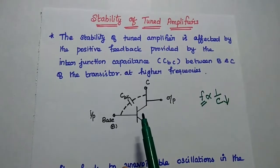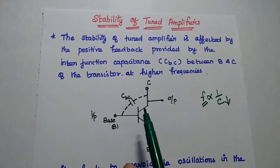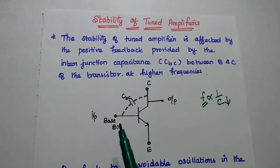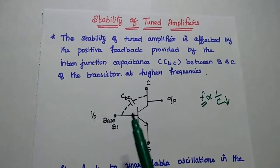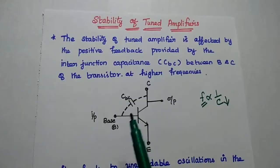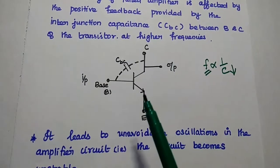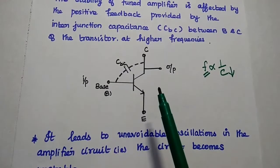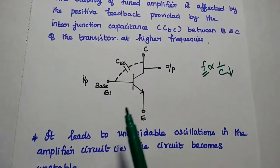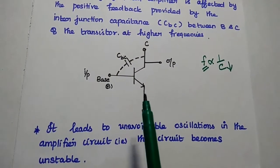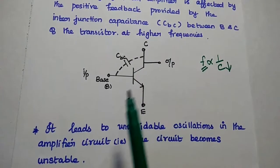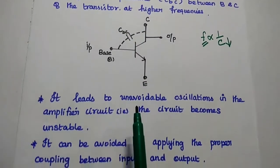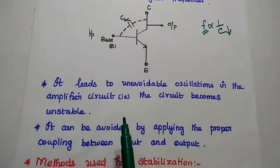At some frequency range, this feedback signal is equal to the input signal along with the phase. That means it can provide positive feedback. Due to this positive feedback, the circuit leads to unwanted oscillations in the amplifier circuit — that means the circuit becomes unstable, leading to unavoidable oscillations.